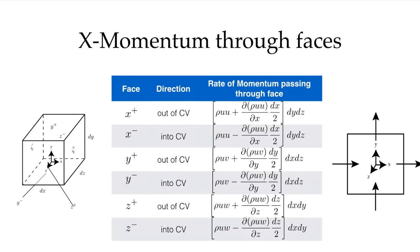We need to evaluate these terms rather than just saying they're evaluated on the x-plus face. I do that using a Taylor series expansion, just as in conservation of mass. The momentum going through the x-face — rho u times the area gives the mass flow rate, and multiplying by u gives momentum in the x-direction. Knowing it at the center, I move to the face using the rate of change of that quantity multiplied by the distance dx over 2, then multiplied by the area of the face dy dz.